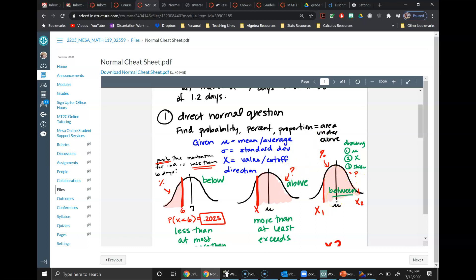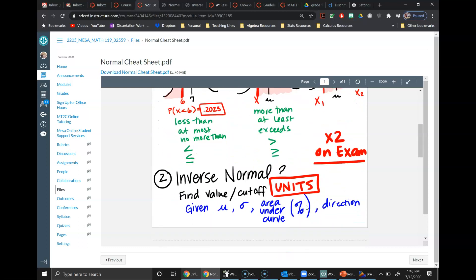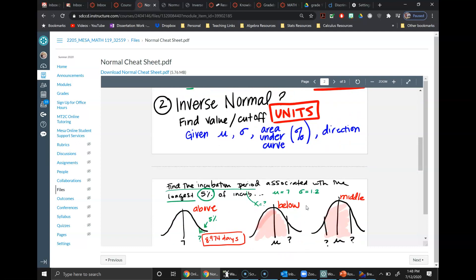The second type is inverse norm. So in these questions we're asked to find the value for a particular percentage or percentile, and these we will definitely have units in our answer. You'll be given the mean, the standard deviation, and the actual area. So like I said, seeing a percentage is a really good clue that we're doing an inverse problem.